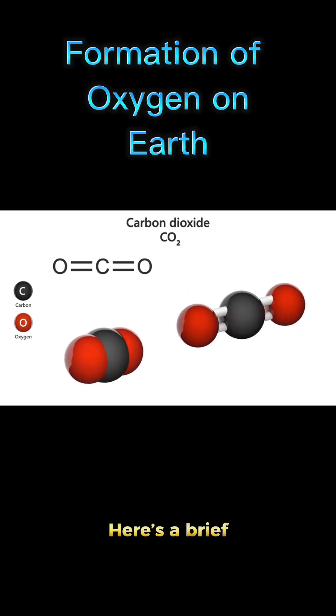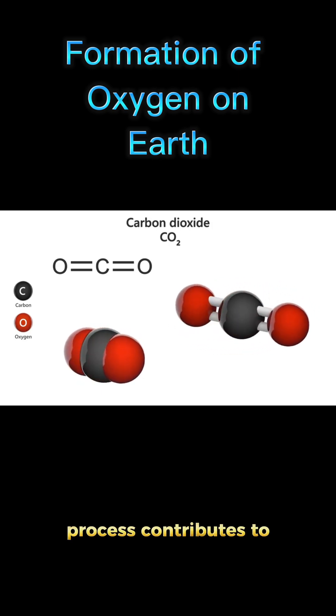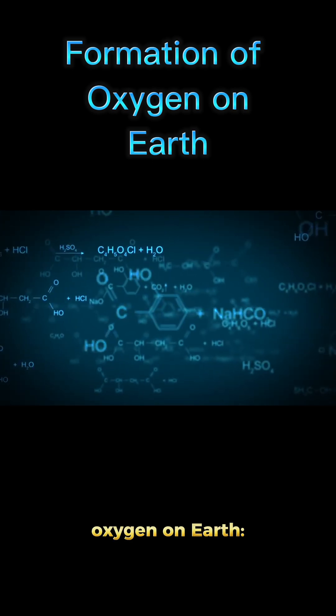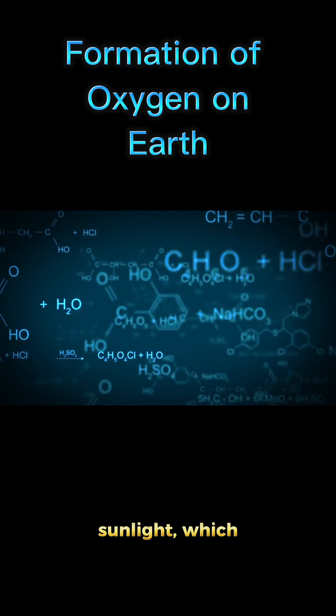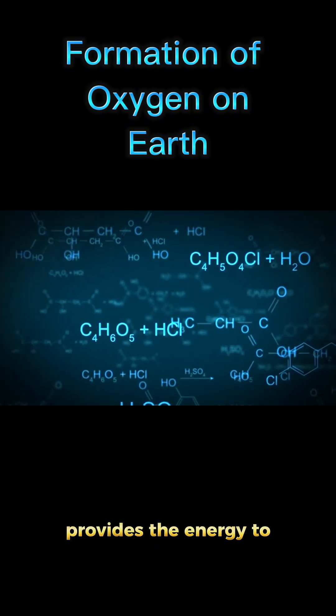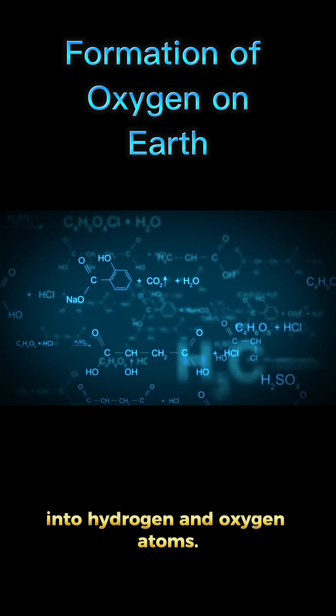Here's a brief overview of how this process contributes to the formation of oxygen on Earth. Chlorophyll in plant cells absorbs sunlight, which provides the energy to split water molecules into hydrogen and oxygen atoms.